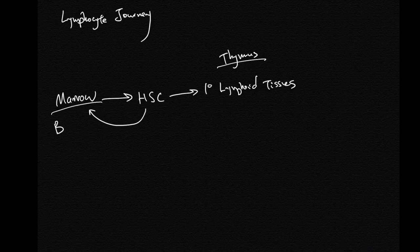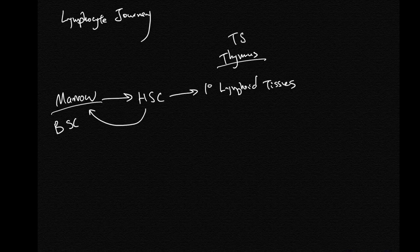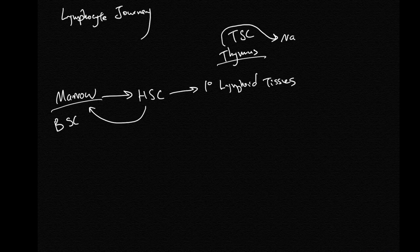In the thymus, the cells will commit to being the T stem cell. The primary lymphoid tissues will nurture these stem cells and make them into naive cells.